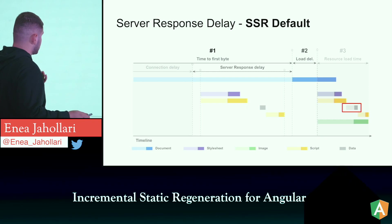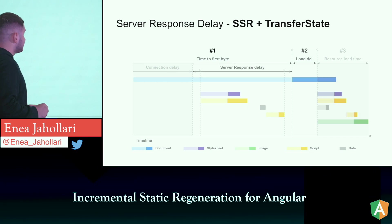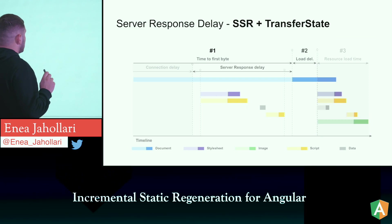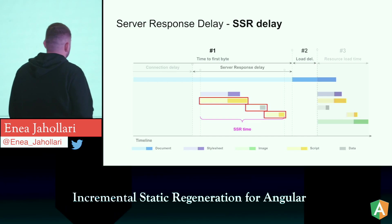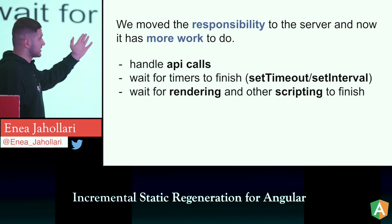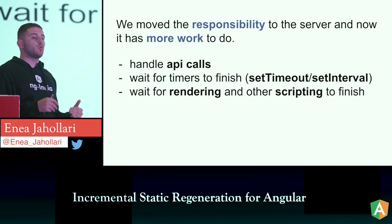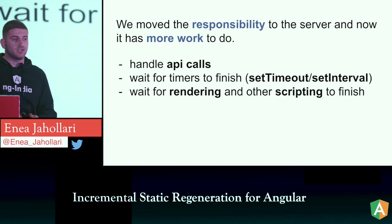If we use transfer state, that data moves to the beginning of the resource loading time. The server has more work to do: API calls, waiting for timers to finish — like setTimeout and setInterval — because server-side rendering depends on zone.js. The setTimeout and setInterval won't let the zone become stable, so it waits for them to finish before completing the rendering.